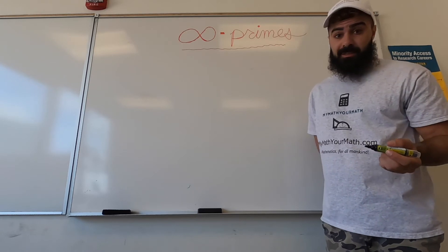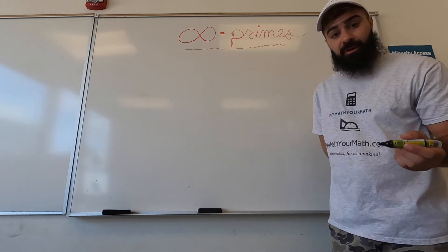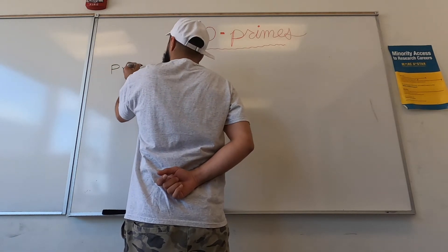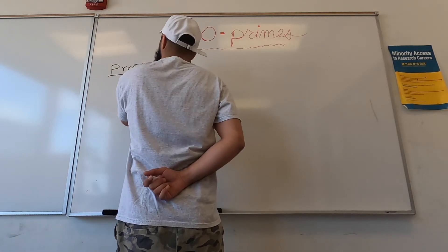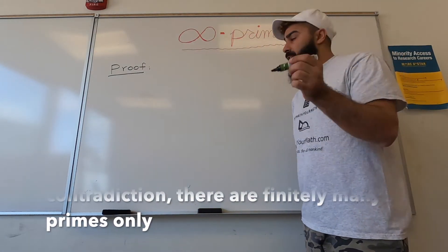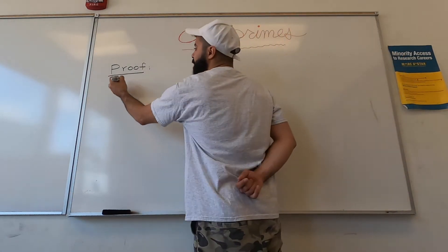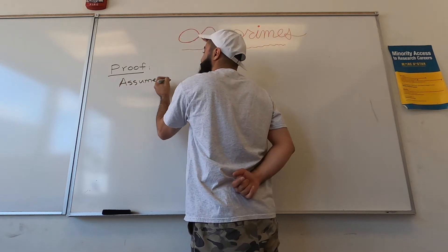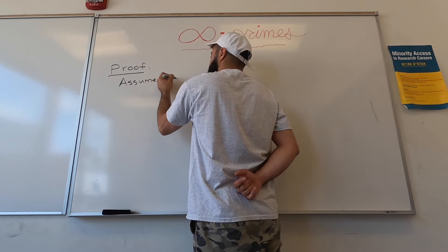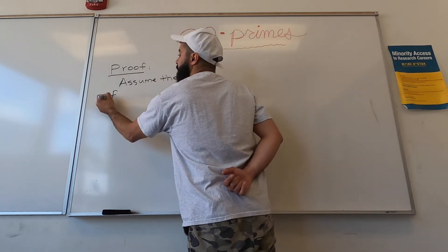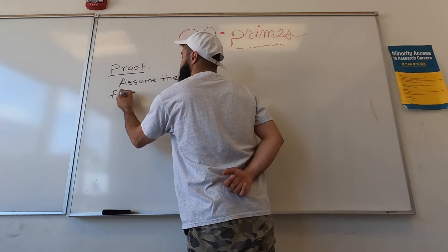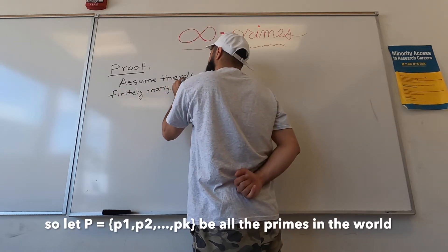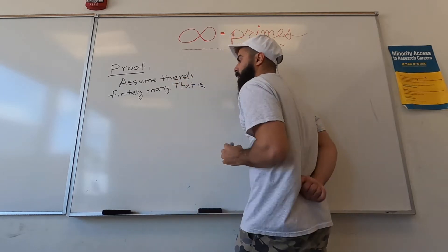However, there are infinitely many primes in the whole world, and to show this requires some proof. We're going to do a little proof on the fact that there are infinitely many primes. We're going to do what's called a proof by contradiction. We're going to assume that there are finitely many primes.